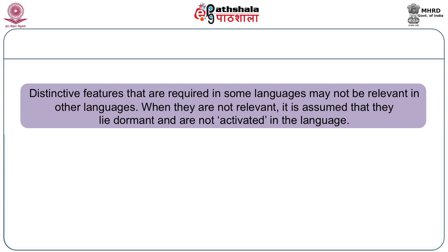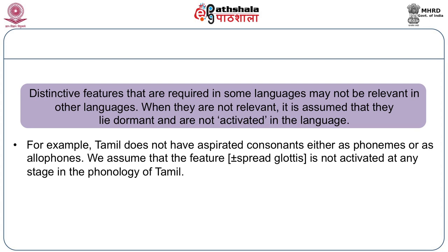It is likely that some features are never activated in a specific language. For example, in Tamil, we do not find aspirated sounds at all. Even other sounds which could be said to have the plus spread glottis feature, such as ha, are absent in Tamil. So in Tamil, we assume that the feature plus/minus spread glottis is never activated. We thus have a universal set of distinctive features. The fact that features may be activated early, activated late, or not activated at all accounts for the role of distinctive features in different ways and the organization of sounds in different languages.